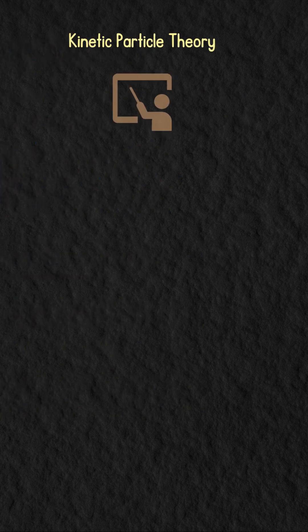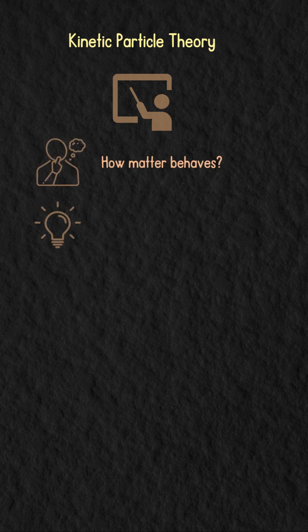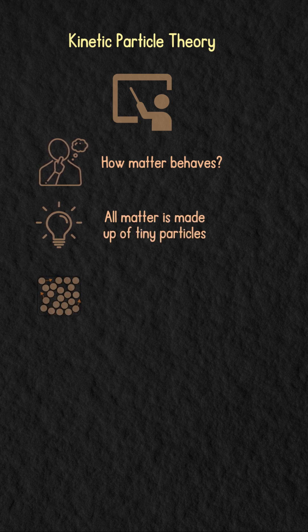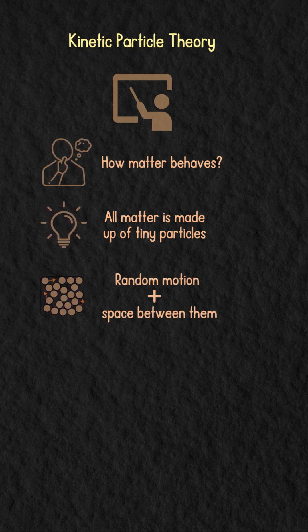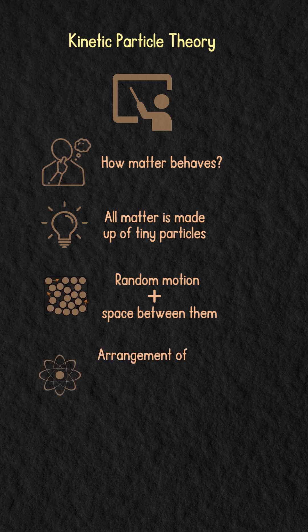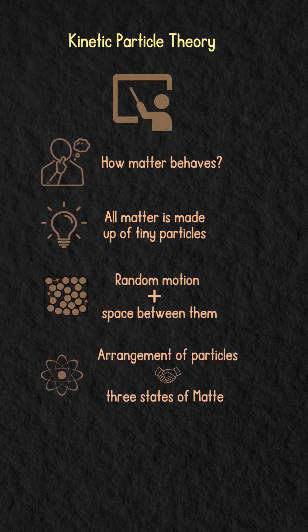The kinetic particle theory helps to explain the way that matter behaves. It is based on the idea that all matter is made up of tiny particles, like a small solid sphere, that are in random motion and that have space between them. The kinetic particle theory can be used as a scientific model to explain how the arrangement of particles relates to the properties of the three states of matter.